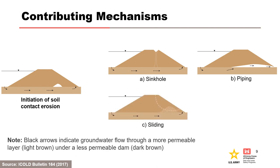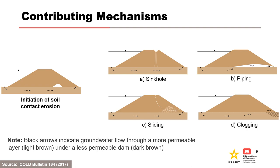In Figure C, soil contact erosion leads to the loss of stability or unraveling of the embankment section. In Figure D, the eroded fine particles clog a permeable layer and increase pore pressures in the embankment, which may result in hydraulic fracture and uplift of the downstream toe.